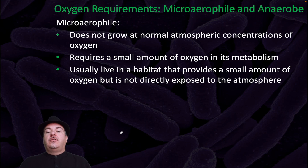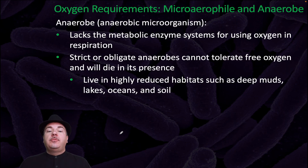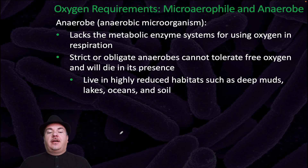Microaerophiles do not grow at normal atmospheric concentrations of oxygen — they require only a small amount of oxygen in their metabolism and usually live in habitats that provide limited oxygen but are not directly exposed to the atmosphere. Anaerobes, or anaerobic microorganisms, lack the metabolic enzyme systems for using oxygen in respiration. Strict or obligate anaerobes cannot tolerate free oxygen and will die in its presence, living in highly reduced oxygen habitats such as deep muds, lakes, oceans, and soil.